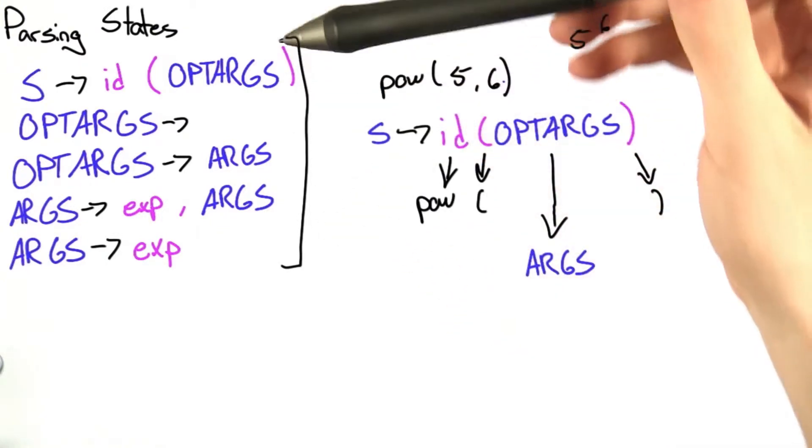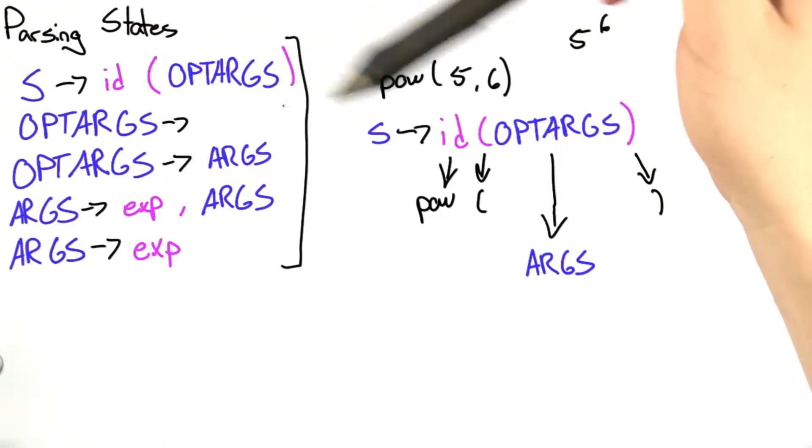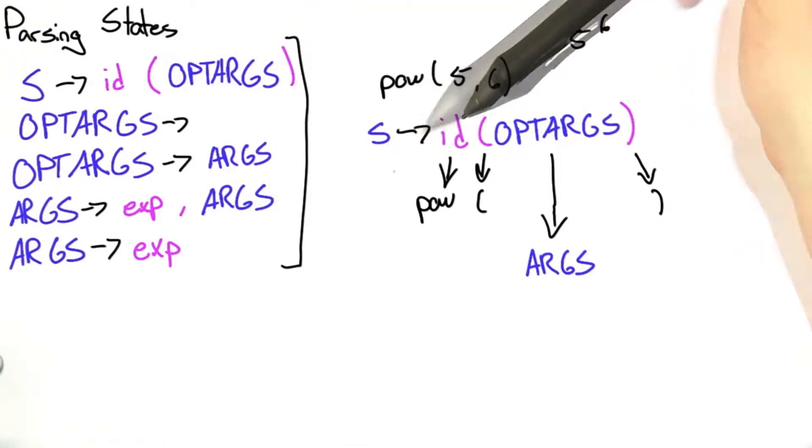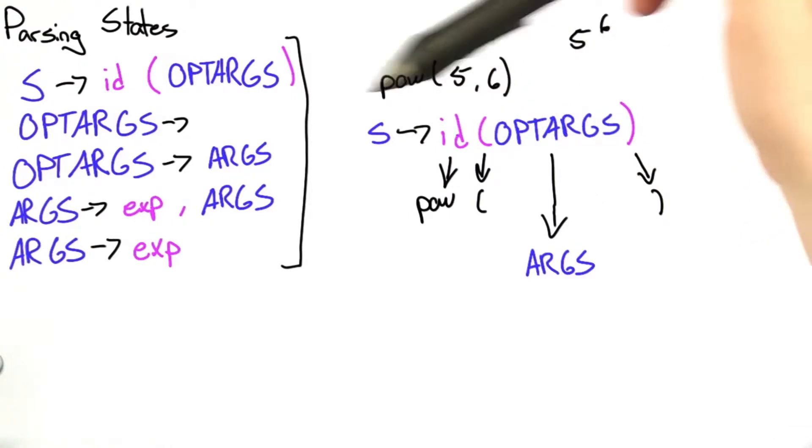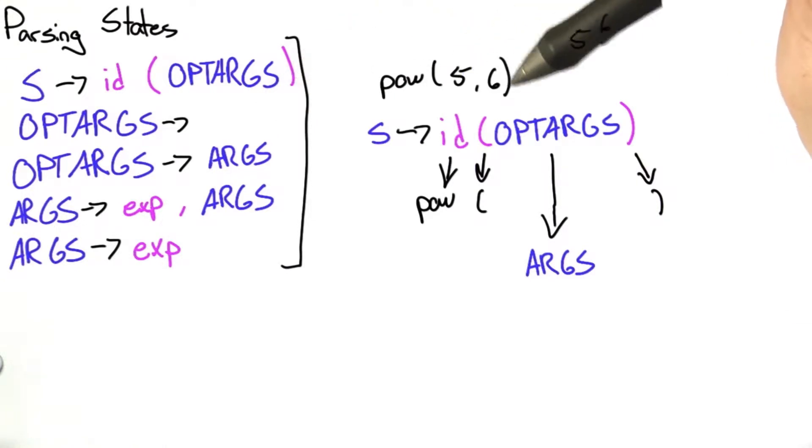To show that this string is in this grammar, we're going to walk through it. Here I've written our first starting rule, which goes to id, some parentheses, and then optional arguments. The id in this case is pow, and then we have two parentheses. The optional arguments, for example, is 5 and 6.